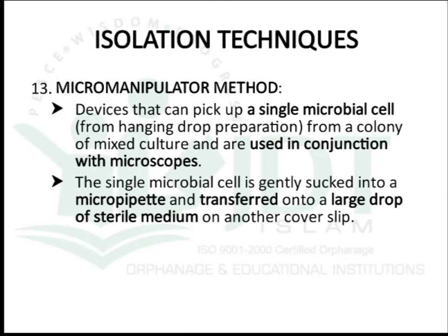The last method is the micromanipulator method. This is a device that can pick up a single microbial cell from a colony of mixed culture and is used in conjunction with a microscope. The single microbial cell is generally sucked into a micropipette and transferred onto a large drop of sterile media on another cover slip, which is then incubated to obtain individual colonies.